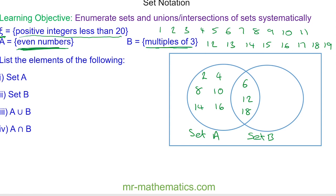Now we have multiples of 3 which are 3, we have the 6, 9, we have the 12, 15, and we have the 18.